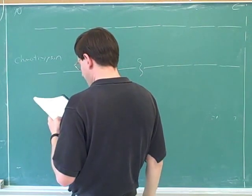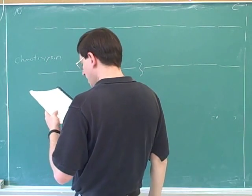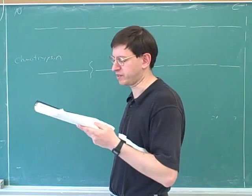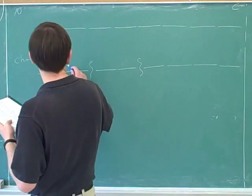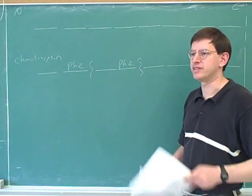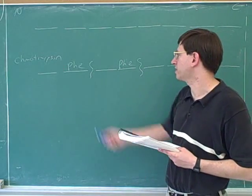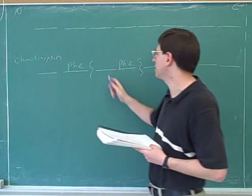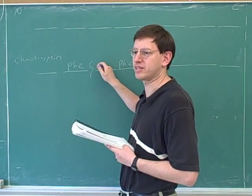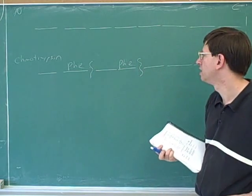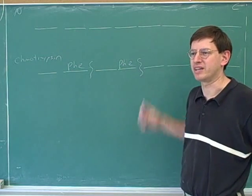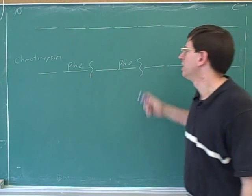So chymotrypsin cleaves on the carboxy side of hydrophobic, aromatic residues. So it could be cleaving next to phenylalanine, tryptophan, or tyrosine. But I'll just pick the first one. Phenylalanine. So I'll put a phenylalanine here and I'll put a phenylalanine here. And that would account for these cleavages. Chymotrypsin would want to cleave here and here. I should not be putting the phenylalanine here because it doesn't cleave on the amino side. It cleaves on the carboxy side. And you could have put trp or tyr. You could have used trp or tyr. And if I wanted to, I could have put these in a different order. This is just one possibility. Okay. So far so good? All right.